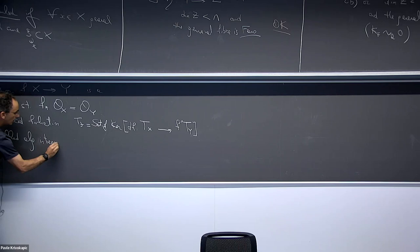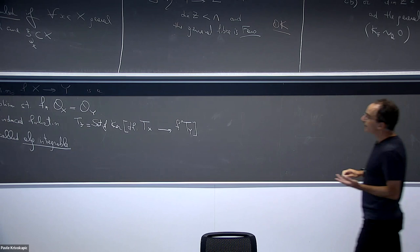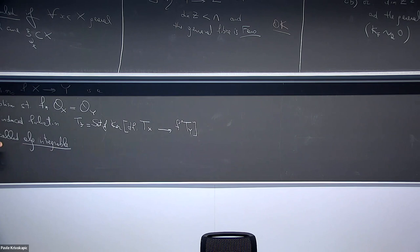This defines a foliation; it is easy to show it is closed under Lie bracket. This is called algebraically integrable. Not all foliations are algebraically integrable — as we heard yesterday — but this is a good class of examples to keep in mind.